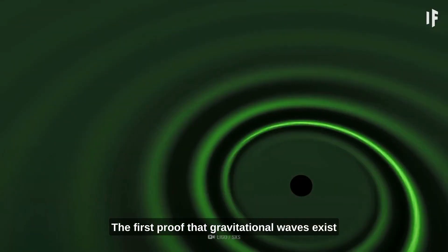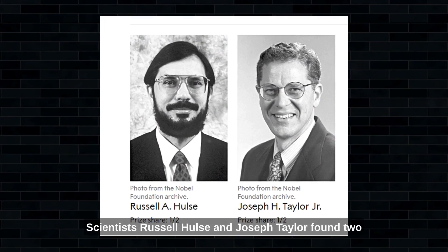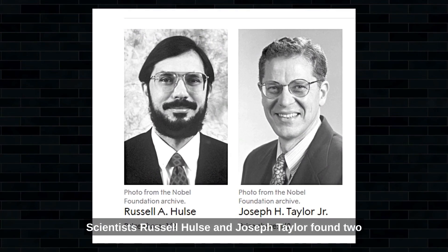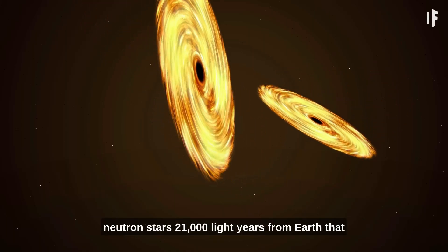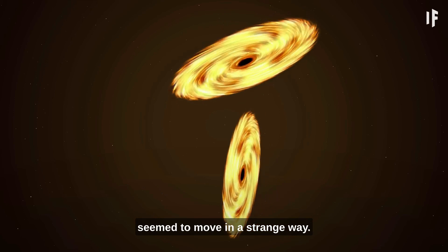The first proof that gravitational waves exist came in 1974. Scientists Russell Hulse and Joseph Taylor found two neutron stars 21,000 light years from Earth that seemed to move in a strange way.